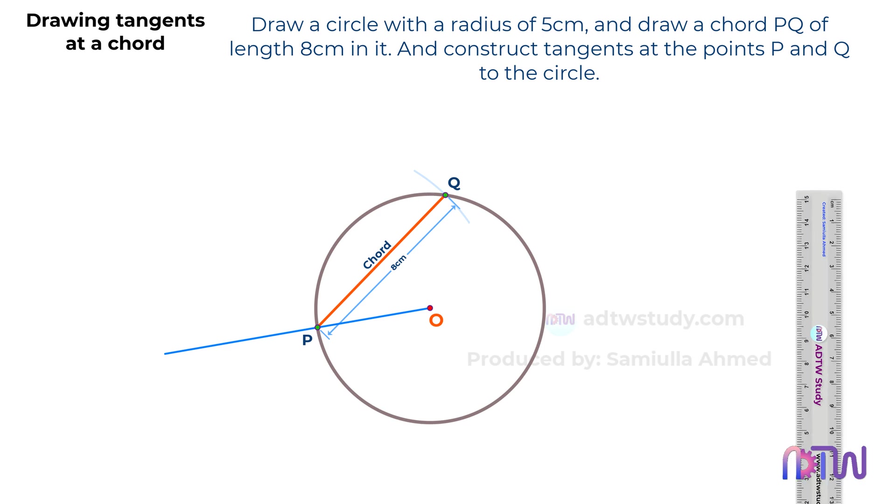After this, using point P as the center, adjust the compass to a certain length and draw arcs accordingly.